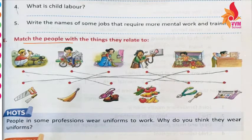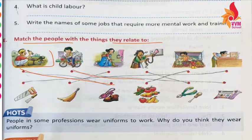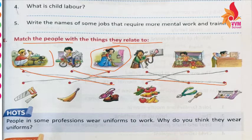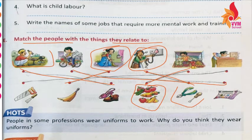Next: match the people with the things they are related to. There are some things given and some works — you have to match the related things. A cobbler — match with shoes. Newspaper vendor — match accordingly. House cleaner — match with room. Electrician — match with these tools. Vegetable seller — match with green grocery. Carpenter — match with these tools.